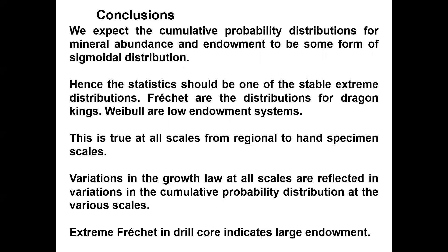In conclusion, we expect the cumulative probability distributions from mineral abundance and endowment to be some form of sigmoidal distribution, which means we end up with a stable extreme value distribution. Fréchet distributions are for dragon kings and Weibulls are for low-endowment systems. This is true at all scales from regional to hand specimen. Variations in the growth law at all scales are reflected in variations in the cumulative probability distribution at those scales. An extreme Fréchet in a drillcore indicates large endowment.